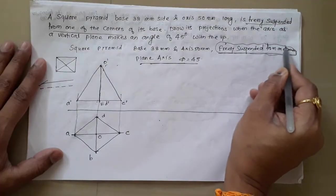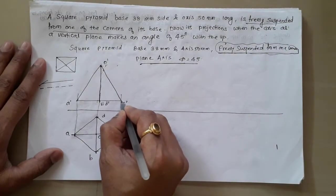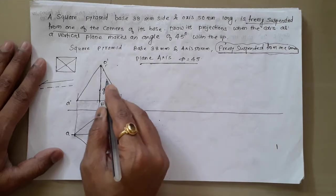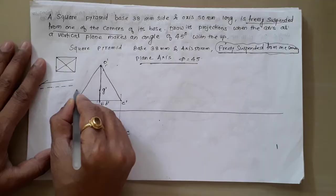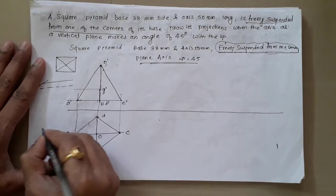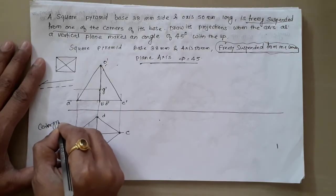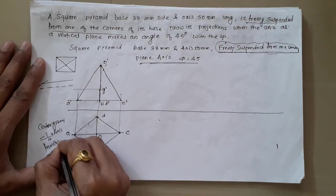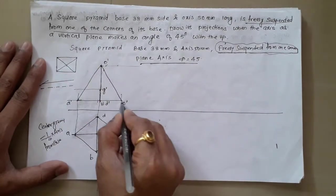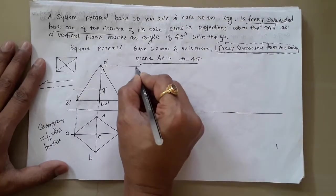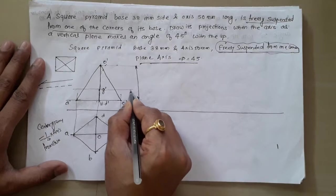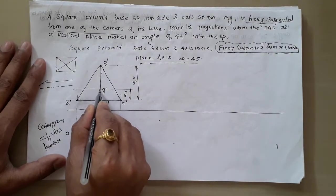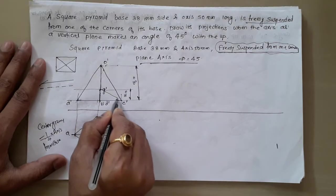The next step: the pyramid is freely suspended from one of the corners, so you need to locate the center of gravity. In the case of a pyramid or cone, the center of gravity lies at a height of one fourth of the axis from the base. Here the axis height is 50 mm, so one fourth of 50 mm is 12.5 mm. Mark this point on the axis from the base — that point is the center of gravity G dash.